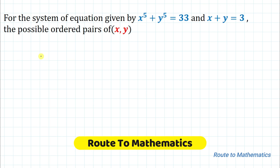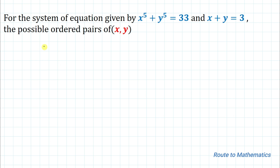Hello everyone, welcome to Root to Mathematics. In this video we are going to solve an interesting system of equations. The given question is: for the system of equations given by x⁵ + y⁵ = 33 and x + y = 3, find the possible ordered pairs of x, y. Before going through the solution, please subscribe to my channel and hit the like button for more such interesting videos.